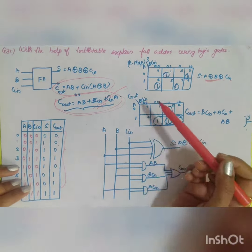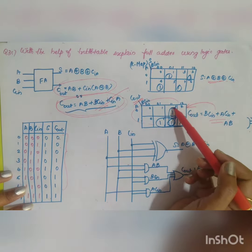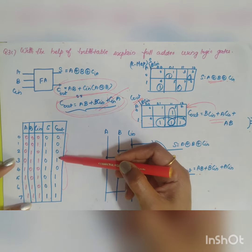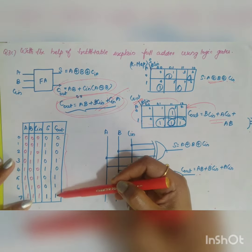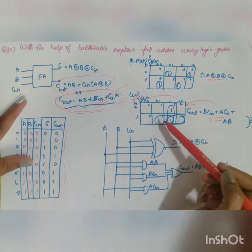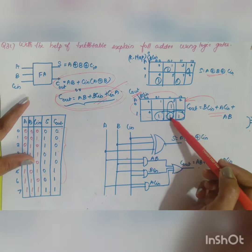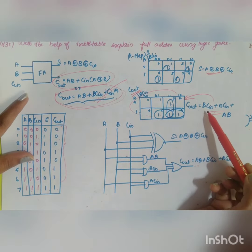Carry is equal to 3, 5, 6, 7. So 3, 5, 6, 7 will have the value as 1. So carry out will be equal to - for example, this expression...